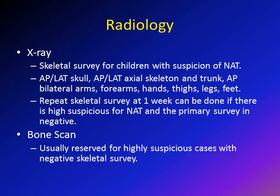For imaging, the primary study is x-ray, and we perform a skeletal survey or bone survey. This consists of AP and lateral of the skull, AP and lateral of the axial skeleton, and AP views of both arms, forearms, hands, legs, thighs, and feet. If the survey is negative but suspicion remains high, repeat it after one week to look for callus and periosteal reaction. Rarely, a bone scan is needed if the skeletal survey is still negative — it can show rib fractures and vertebral fractures more clearly than regular x-ray.